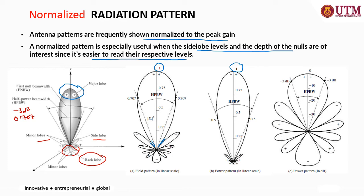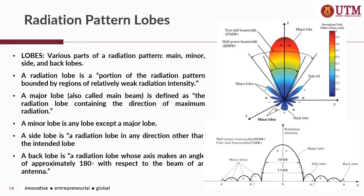These are some representations of the idealized radiation pattern in linear value and also in dB values. Next is the radiation pattern lobe structure. As mentioned earlier, it consists of the major lobe, which has the maximum radiation in the intended region, and it also has a full null beam width. We can see that at the null point the magnitude is 0, and when represented in 2D this region is the full null beam width.